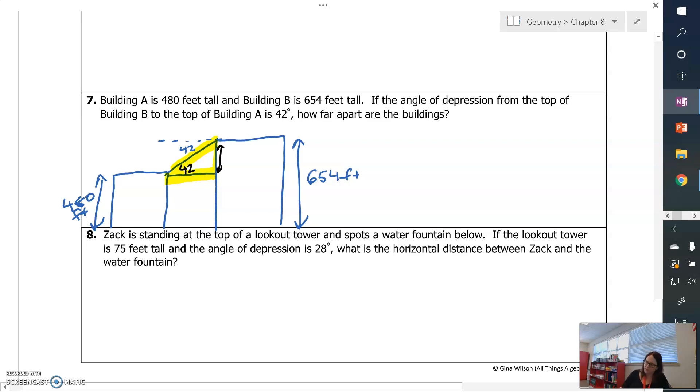And I need to know the length of this piece here. I'm going to take 654 and subtract 480 to find that length. And that's going to be 654 minus 480. I've got 174 feet, so then this length here is 174. And what I'm looking for is how far apart are the buildings. I'm looking for X.